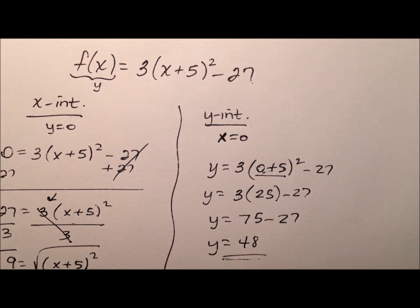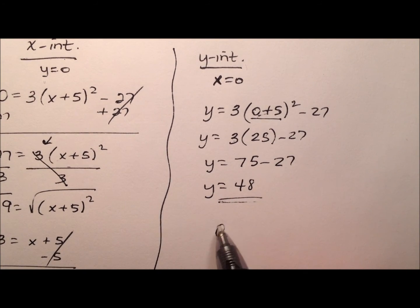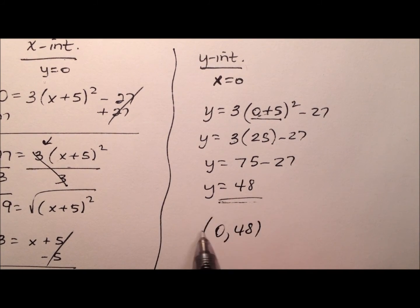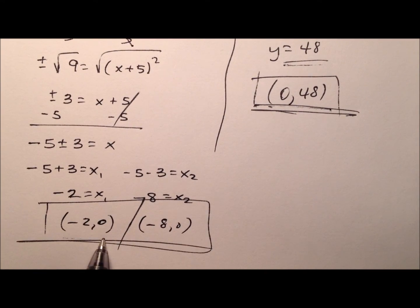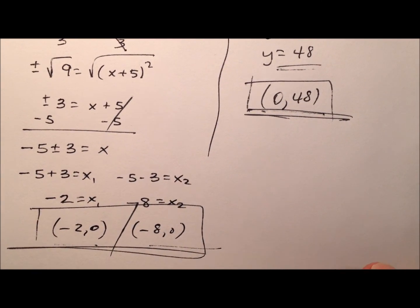And so we can write this ordered pair as well, (0, 48), and that'll be our y-intercept. So we have 3 intercepts: (0, 48), (-2, 0), and (-8, 0).